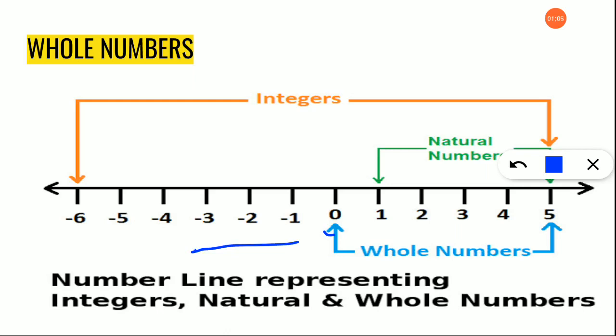The numbers starting from 0, 1, 2, 3 we call whole numbers, and the numbers starting from 1, 2, 3 and so on we call natural numbers. So what is a whole number? Any number that is 0 or more than 0 we call a whole number.